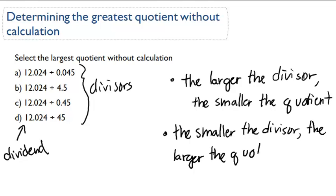So in this problem, we want to find the largest quotient. Basically, we want to find the smallest divisor. And the smallest divisor is 0.045, so this would give us the largest quotient.